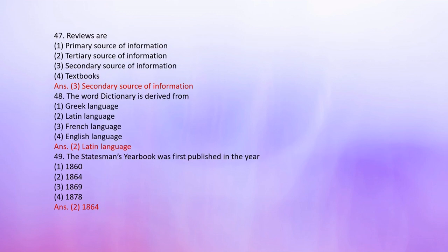Number 47: Reviews are — 1. Primary source of information, 2. Tertiary source of information, 3. Secondary source of information, 4. Textbooks. The correct answer is 3: Secondary source of information.